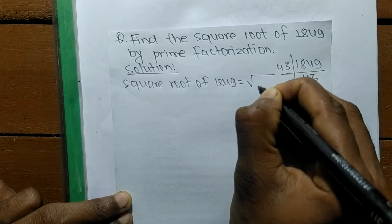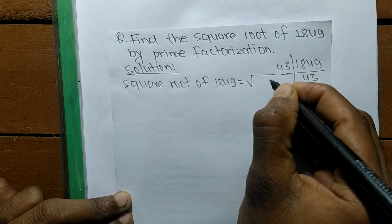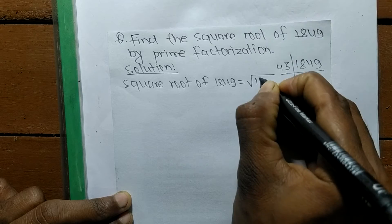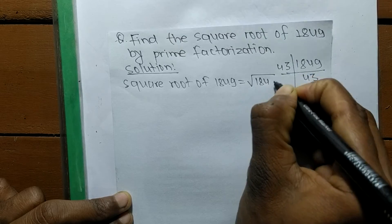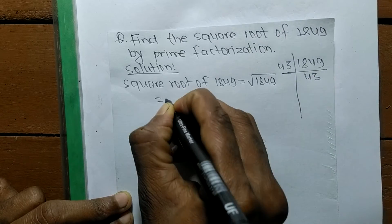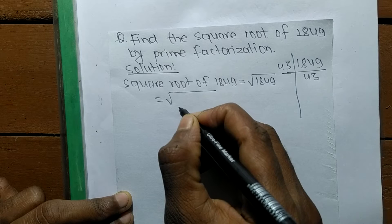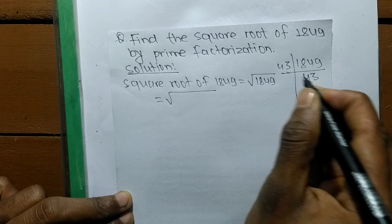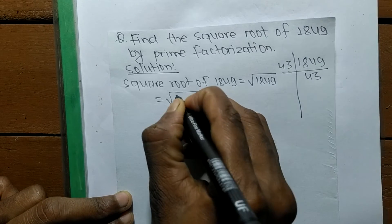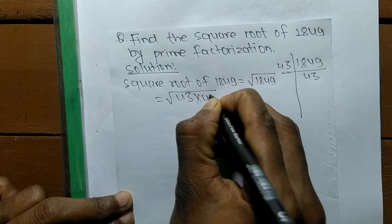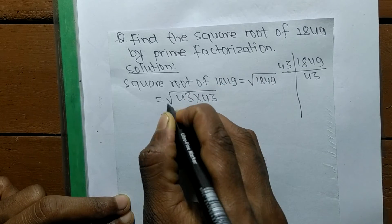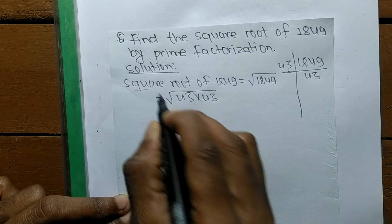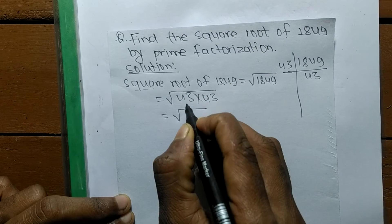This sign is the sign of a square root, and we are finding the square root of 1849. We write down the prime factors of 1849, which is 43 times 43. We have to make the square of the given number.